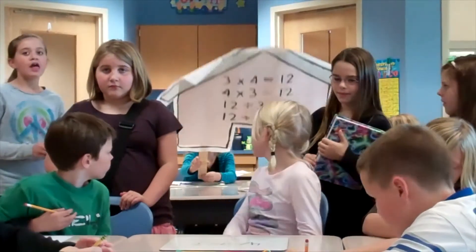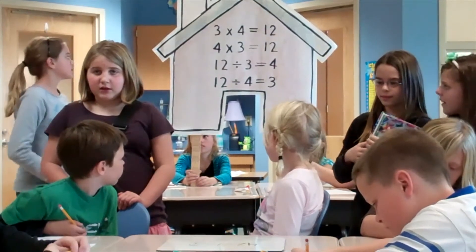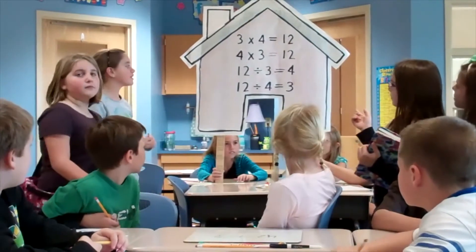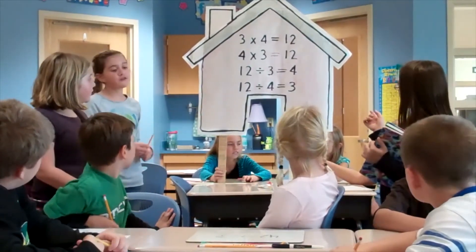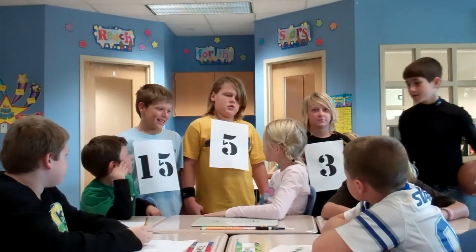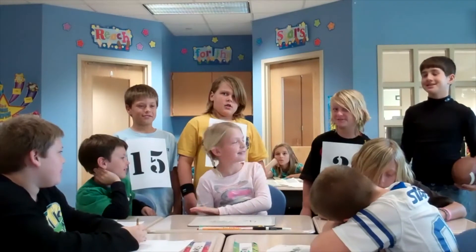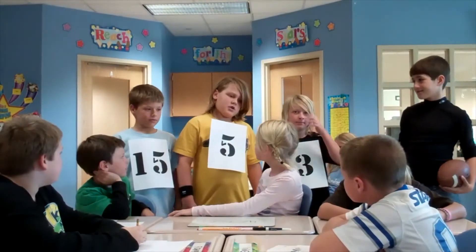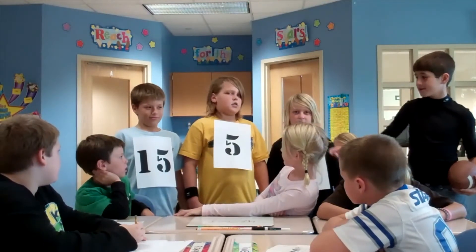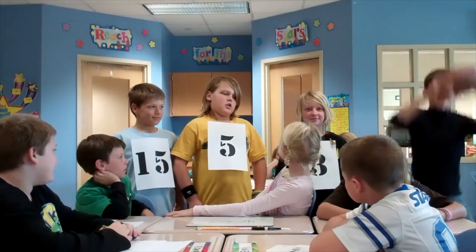Think of a fact family. Think of a house — three numbers live together. They are the family members. Three times four is twelve. Four times three is twelve. Twelve divided by three is four. And twelve divided by four is three. Or, if you're not in a family, you could think of a team. The whole team has to work together to make a play. The different players are the numbers. Three and five multiply together to get fifteen. Fifteen divided by five is three. Touchdown!